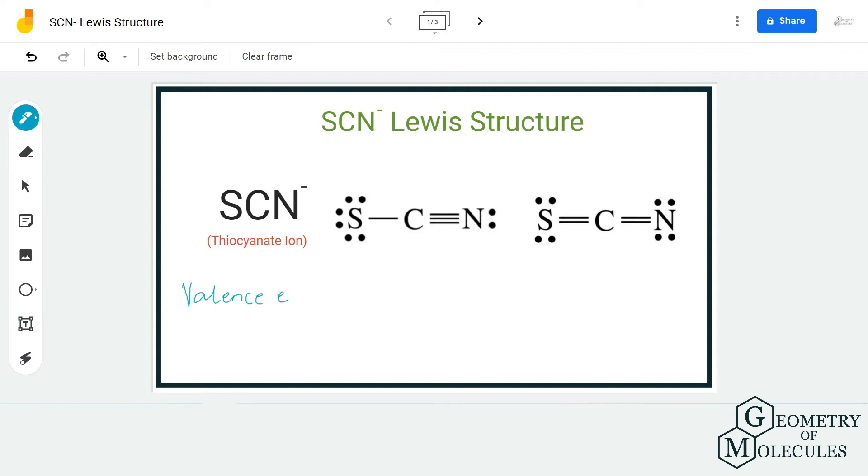For SCN minus the total number of valence electrons are 16. Do not forget to count this electron which is present over here as a negative charge.